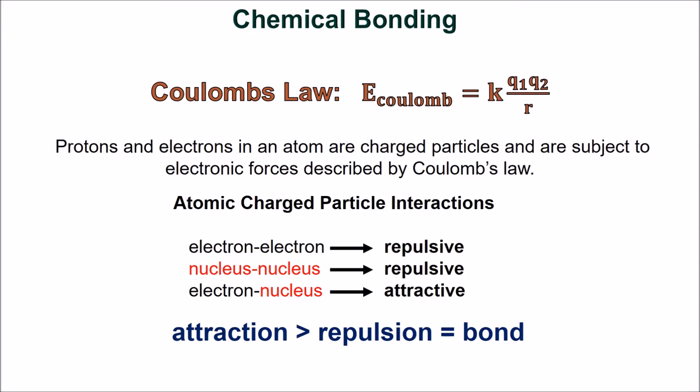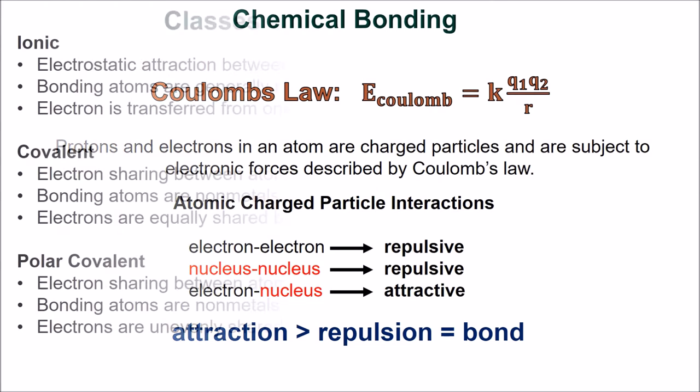The charged particle interactions in an atom are as follows: the interaction between two electrons is repulsive, the interaction between two nuclei is repulsive, and the interaction between electrons and nuclei is attractive. If the attraction between two atoms is greater than the repulsion, a bond is formed.